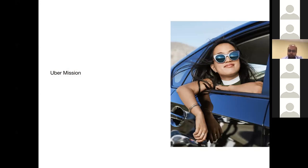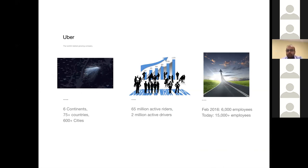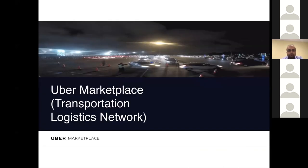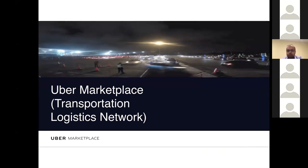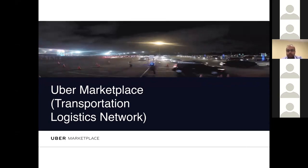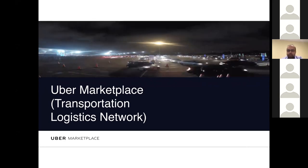Uber's mission is to build a network of reliable transportation for everyone and everywhere. Currently it's a global company — we are on six continents with millions of riders and have grown a lot over the past one or two years. Uber really is a transportation logistics network where we have riders, driver partners, and it's all about making the match between riders and drivers.